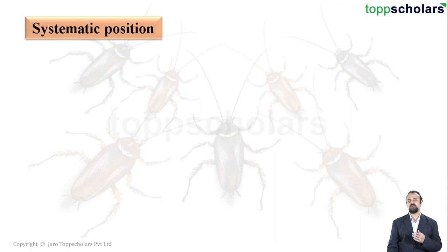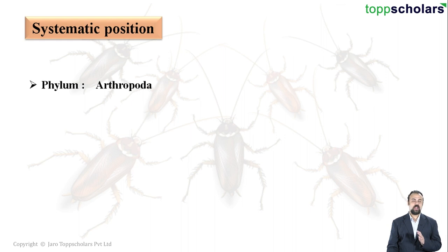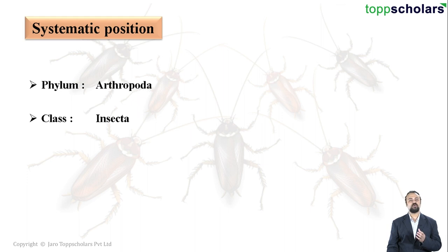Let us break down this word: 'arthro' means jointed and 'poda' means appendages or limbs. This particular phylum includes all organisms that have jointed appendages. Moving on, the class to which cockroaches belong is Insecta.